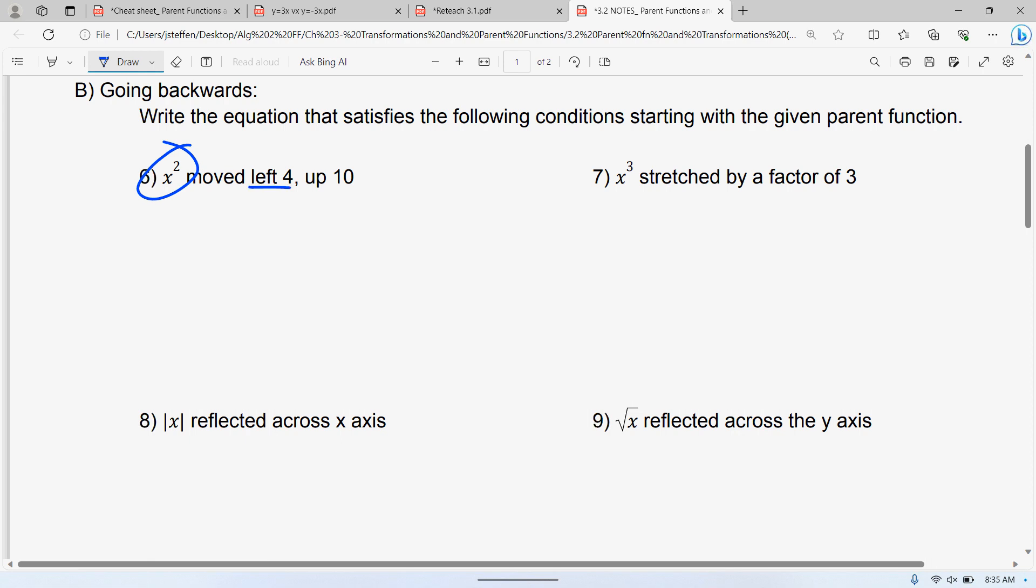But left four is in the parentheses, and remember, it's the opposite in parentheses. Left four is actually plus four. Now, remember, don't forget, this is the most common thing. A lot of people forget to put the square. So it is x squared. That's the parent function. So it's not just the parentheses. Up ten, we put plus ten at the end, that's all I need.